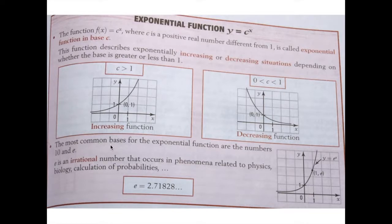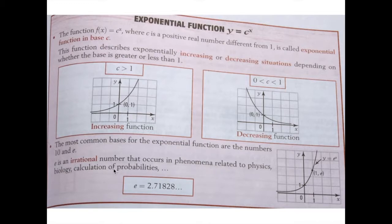The most common bases for exponential functions are the numbers 10 and e. E is an irrational number — it goes on forever without repeating, has no end, and can't be written as a fraction. It's an irrational number that occurs in phenomena related to physics, biology, and calculations of probabilities. We already looked at y is equal to e to the power of x. But what is e? Let's have a look at that with a graph.